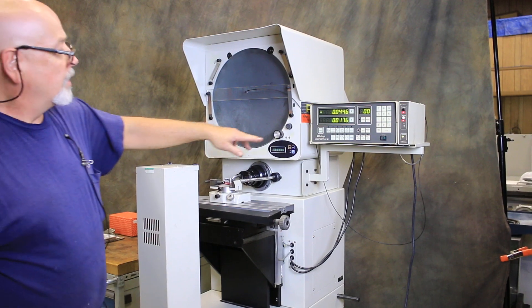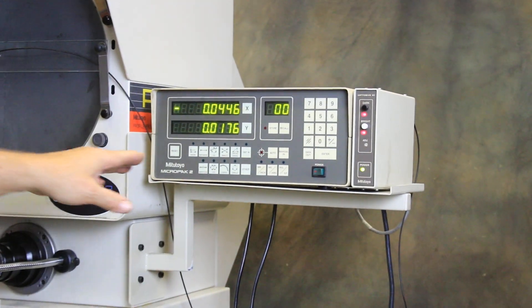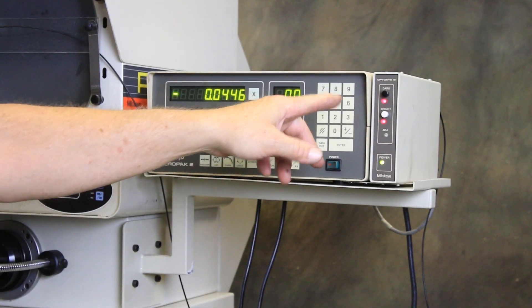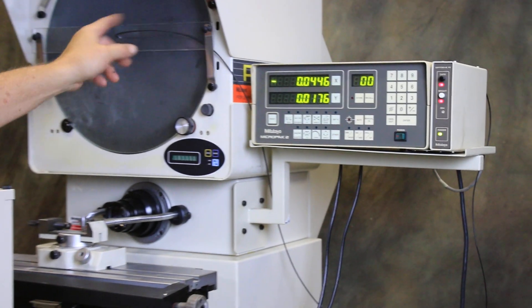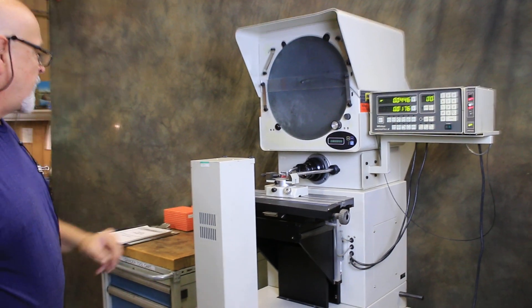It comes with the digital readout with your X and Y axis, also some mathematical functions as well as the edge detection, or in this case it's called the Opti-Eye system, as well as your fiber optic cable going up to the screen and up to the lamp housing.